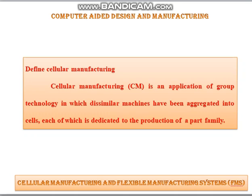In our computer-aided manufacturing subject, chapter 5 — cellular manufacturing and flexible manufacturing system — let us see what is cellular manufacturing. Cellular manufacturing is basically the application of group technology. In this, we arrange all dissimilar machines into one cell and the parts are used for the production.